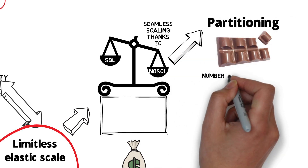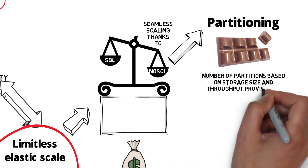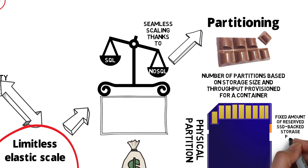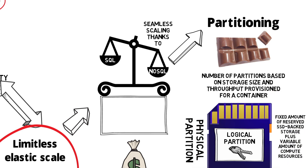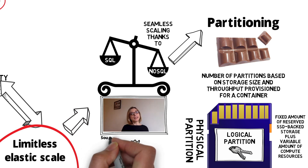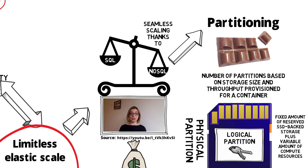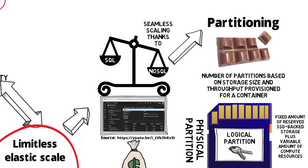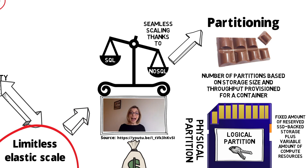Moving on to partitioning — the number of partitions is determined by storage size and throughput provisioned for a container. A physical partition is a fixed amount of reserved SSD-backed storage, plus a variable amount of compute resources such as CPU and memory. A logical partition groups all data associated with a single partition key value. With Azure Cosmos DB, when creating a collection, we configure a partition key property — this is the JSON property within our documents that Cosmos DB uses to distribute data among multiple partitions. Cosmos DB hashes the partition key value and uses the hashed result to determine which partition the JSON document will be stored in, and all documents with the same partition key are stored in the same partition.